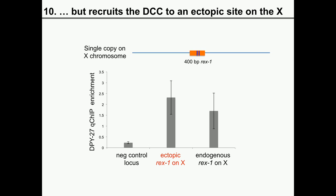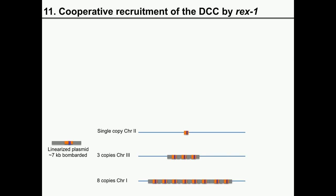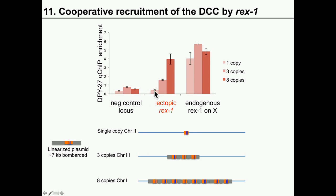REX1 is capable of recruiting the complex to extra-chromosomal arrays outside the context of the X chromosome, but on extra-chromosomal arrays, REX1 is in multi-copy. So perhaps if you increase the copy number of REX1 on the autosome, you can recruit the DCC. We bombarded multiple copies of a linearized plasmid containing REX1: single copy on chromosome 2, 3 copies on chromosome 3, and 8 copies on chromosome 1. With increasing numbers of copies, the ability of REX1 to recruit the DCC increases, suggesting some synergy between REX1 elements in multiple copies — cooperatively recruiting the DCC to the autosomal site.